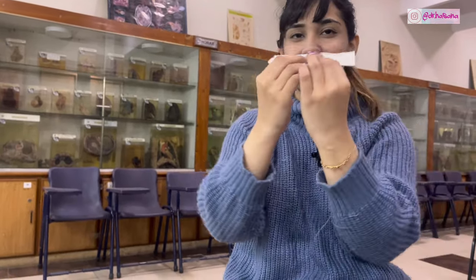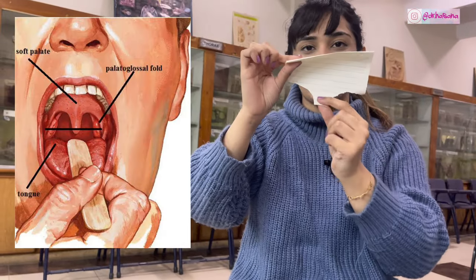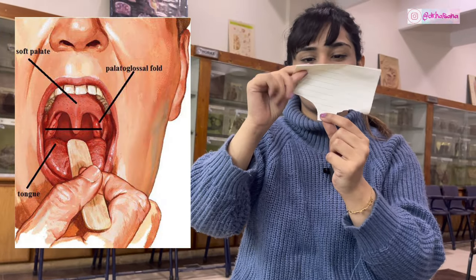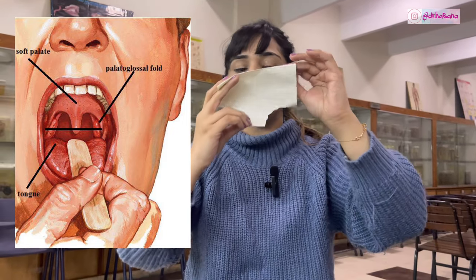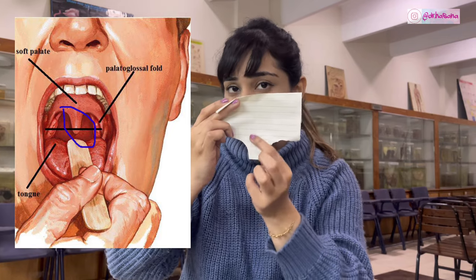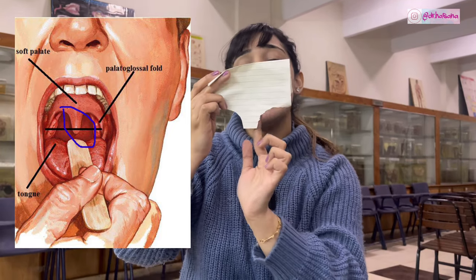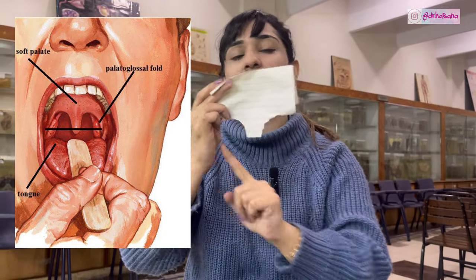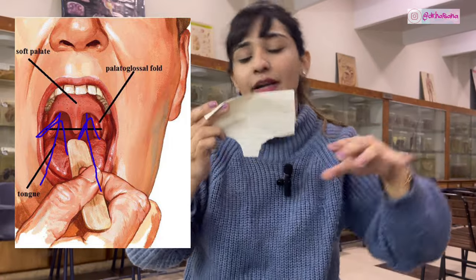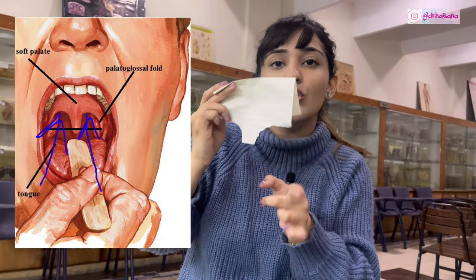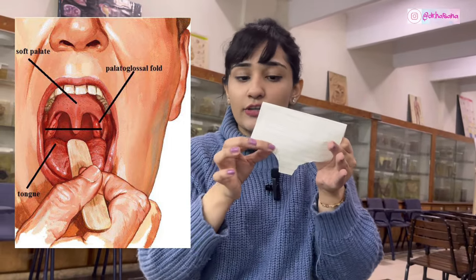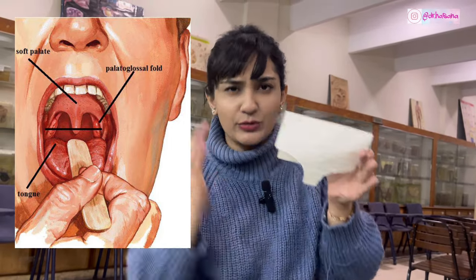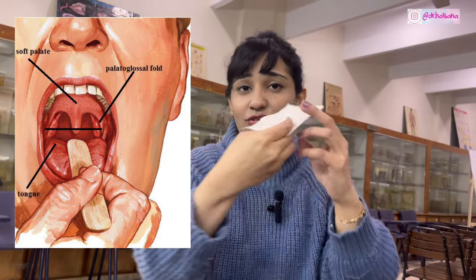When you view someone's mouth, you see the hanging uvula and also two arches that are formed on either side. The posterior border of the soft palate in its median part is folded to form the uvula. On either side, these arches are known as the palatoglossal arch. This arch goes all the way to the sides of the tongue.